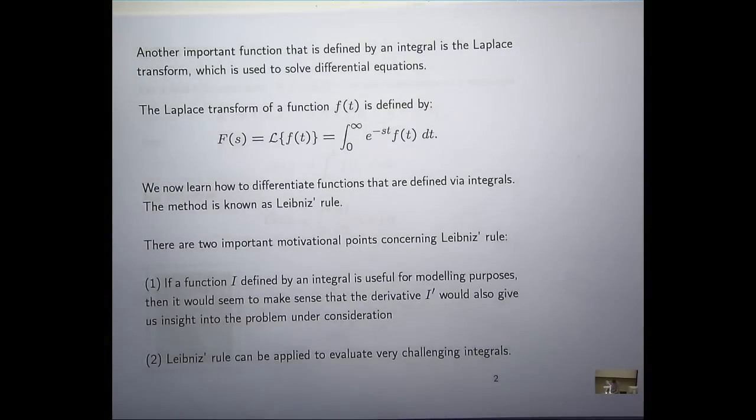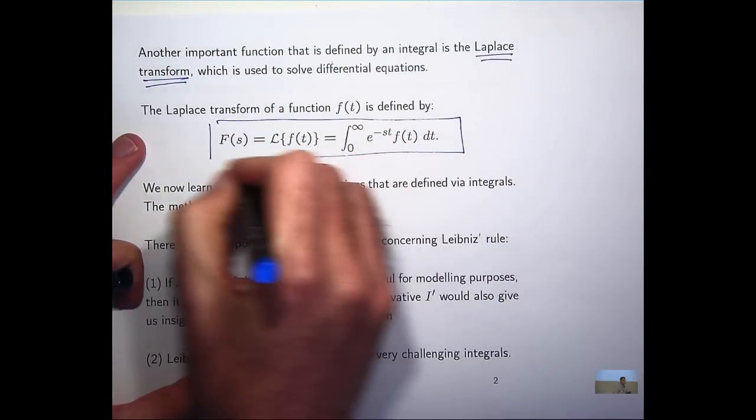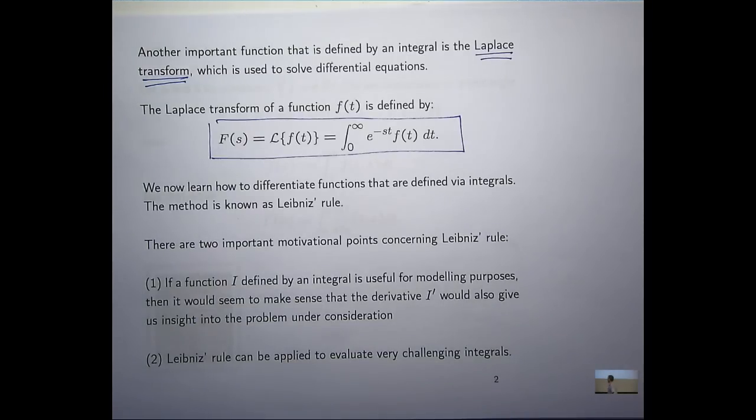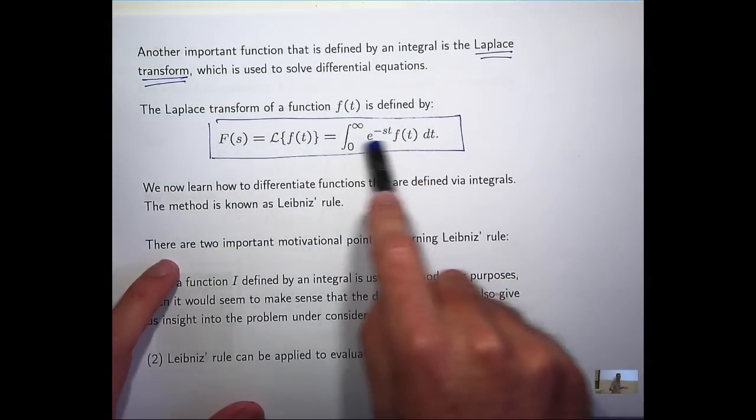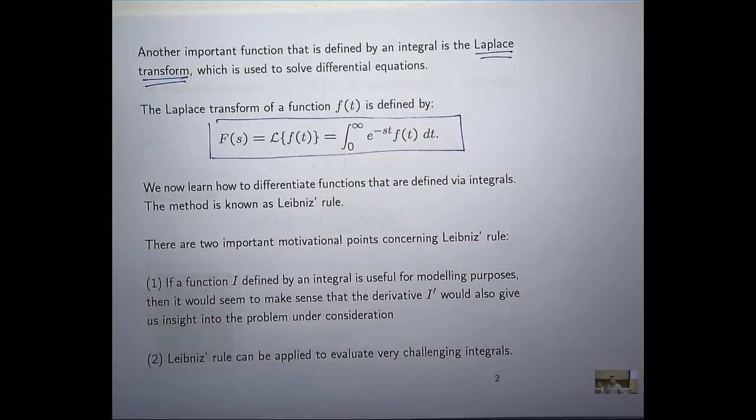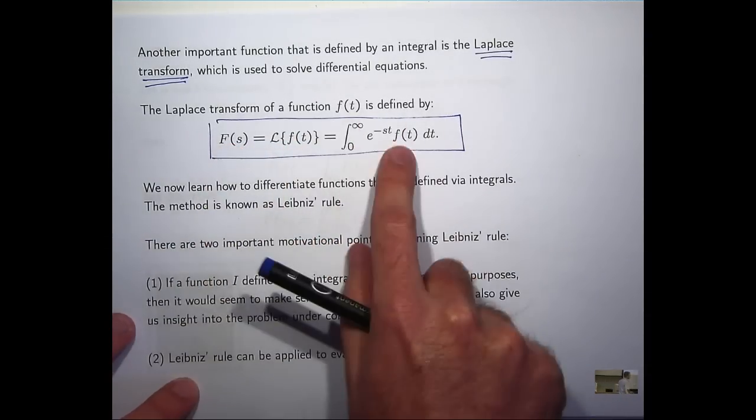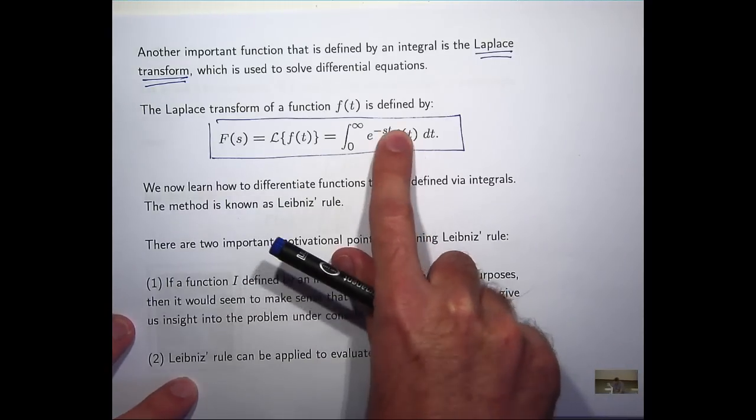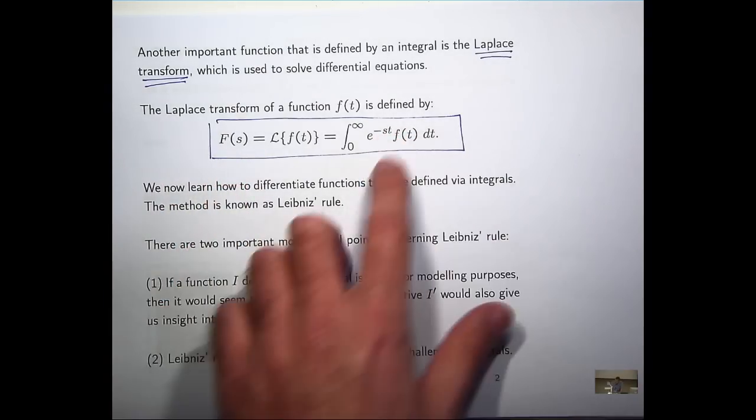Now, another important function defined by an integral is the so-called Laplace transform. So suppose I've got a function, a little f of t, satisfying certain conditions. What the Laplace transform does is it takes your little f, it multiplies by this exponential function and then you integrate over this half line with respect to t. So there's two kinds of notation, this curly L of f(t) and this big F of s. Now, you can see in this integral, t is the dummy variable, but what happens with this s?